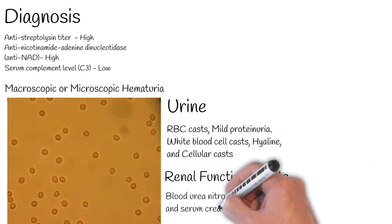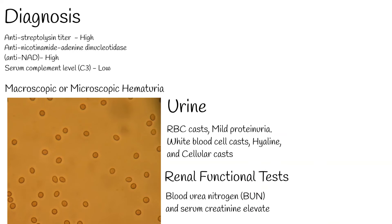Renal function tests — blood urea nitrogen (BUN) and serum creatinine — typically elevate during the acute phase. These values usually return to normal later.